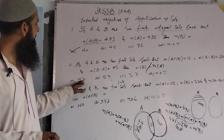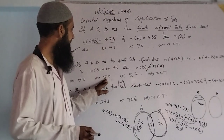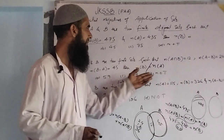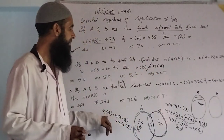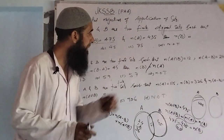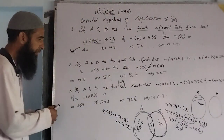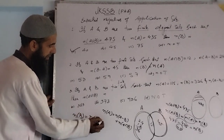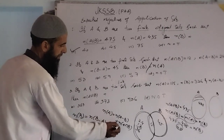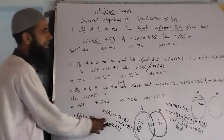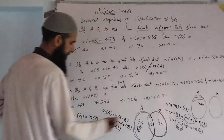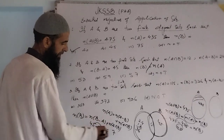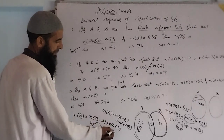Now to find number of elements in B: number of elements in B is always equal to number of elements in B minus A, plus number of elements in A∩B. We have number of elements in B minus A equals 45, plus number of elements in intersection which is 12 — that is 45 plus 12 equals 57.